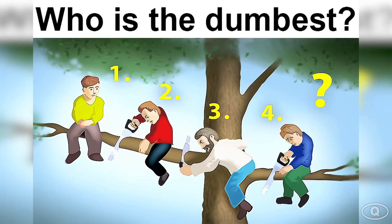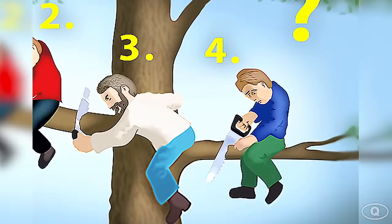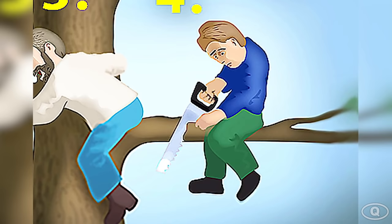Alright, so the dumbest man here in this photo is man number four. This is because he is literally cutting himself off the tree. If you got this correct, go ahead and give yourself a pat on the back. Well done.